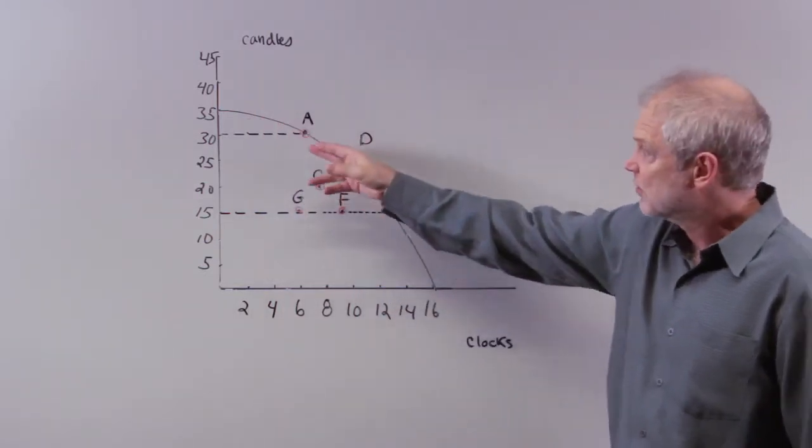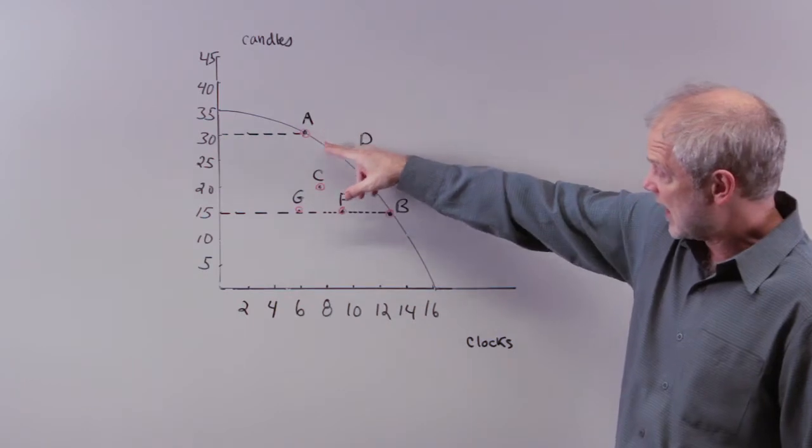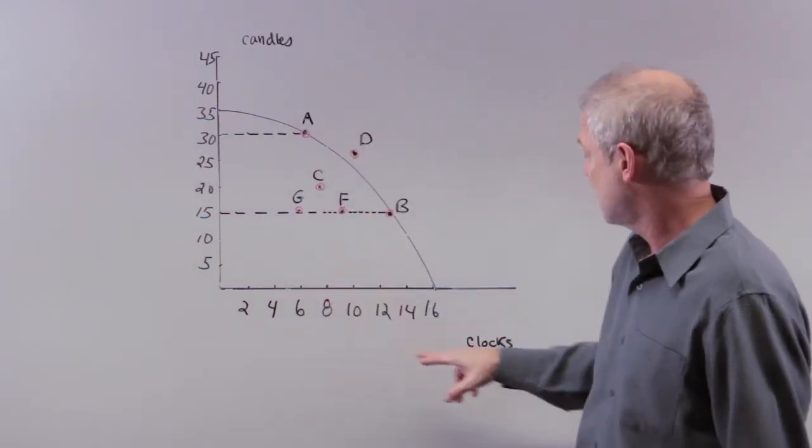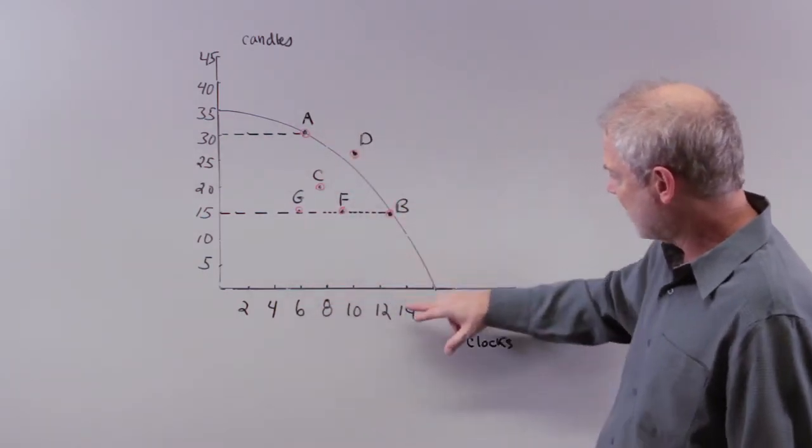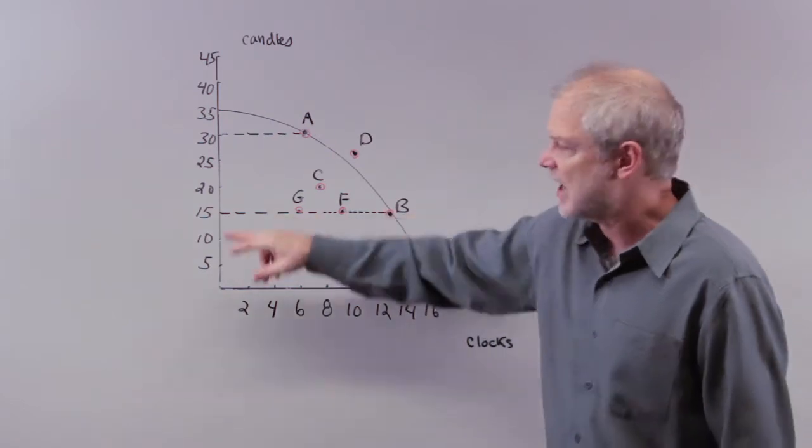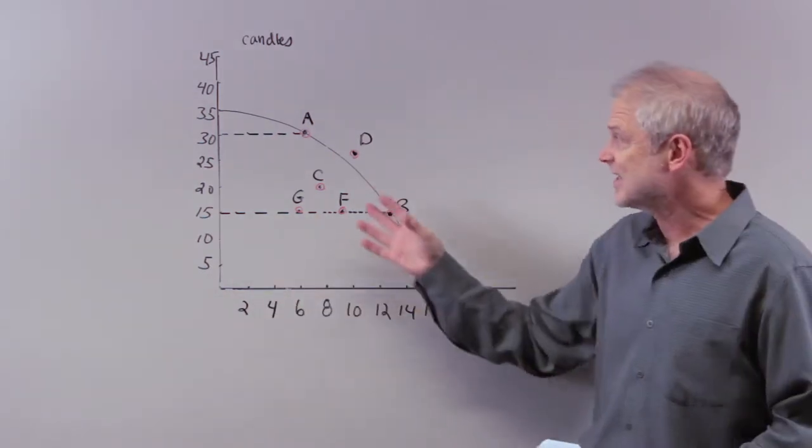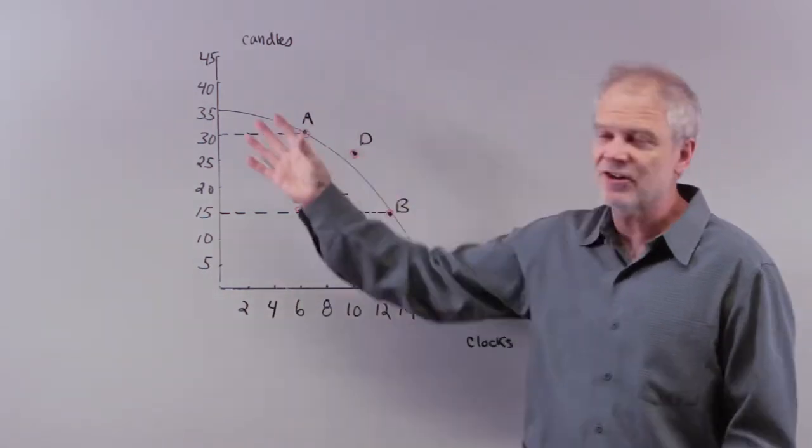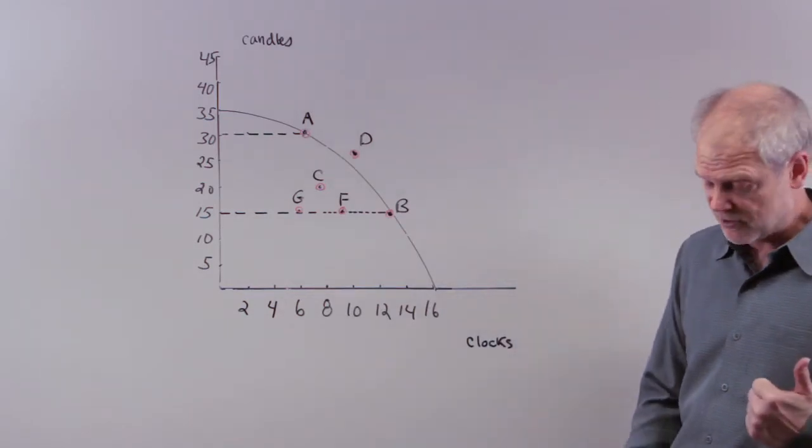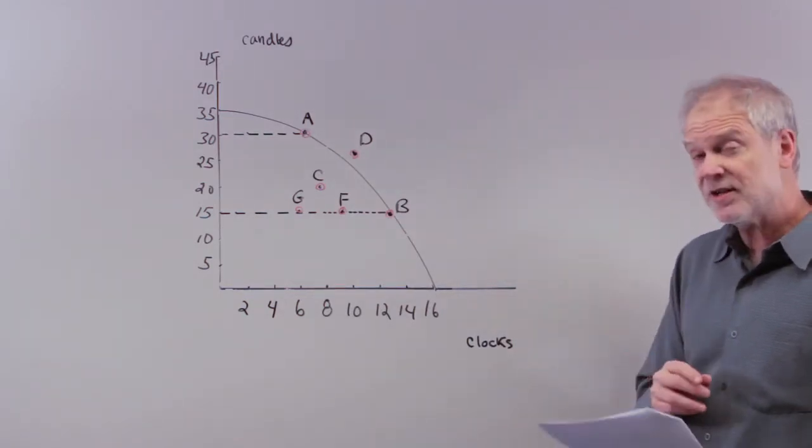are being used to produce either 30 candles and 6 clocks or we could have, in this case, 12 clocks and 15 candles. But we're along the frontier, you're using your resources most efficiently. So, the answer to number six is A and B.